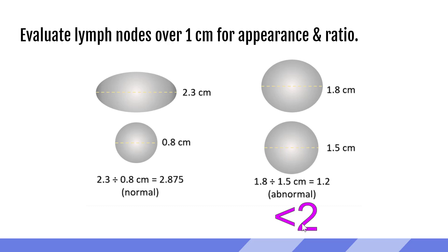So as we're looking through, if we see anything over 1 centimeter, we're going to stop and look at it. We're going to go through our checklist to make sure everything looks normal, or if it clearly looks abnormal. Then we'll look at measurements. If it's on the larger side but still falls into a ratio of 2 or more, it's probably just a reactive lymph node. However, if we are getting that ratio under 2, we are much more concerned about it being an abnormal lymph node and we definitely need to document those. Size isn't everything — that ratio and the appearance both play a really big role. But for anything over a centimeter, stop and take a closer look.